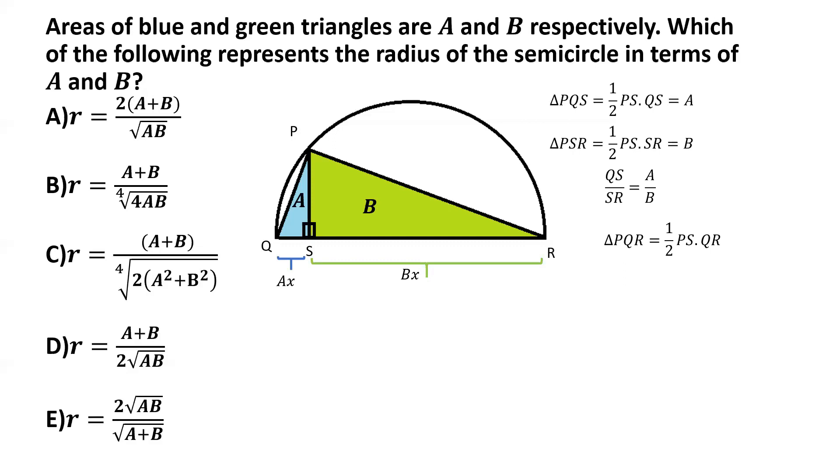It's basically the sum of QS and SR. So we can write this as half multiplied by PS multiplied by AX plus BX. And then we take X common. We are left with half PS multiplied by A plus B times X.